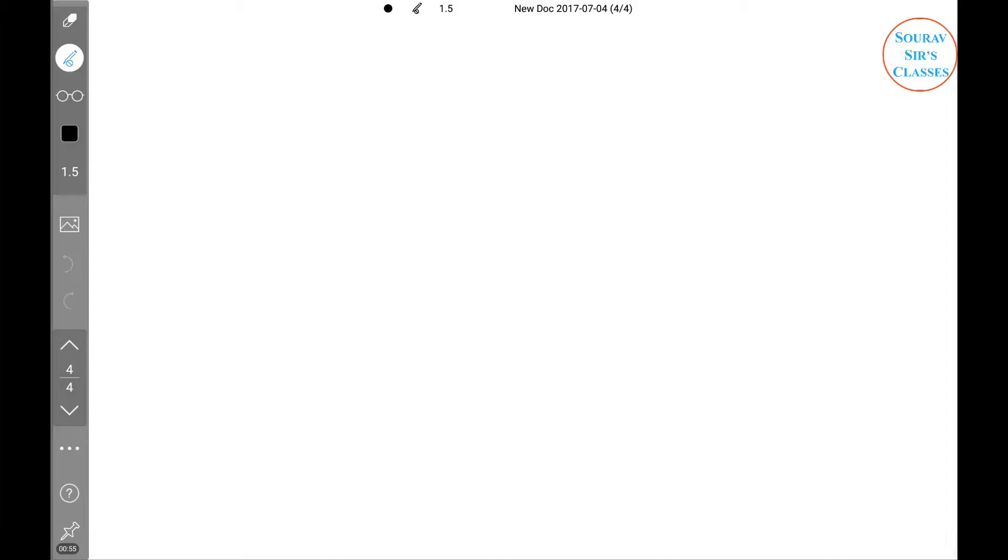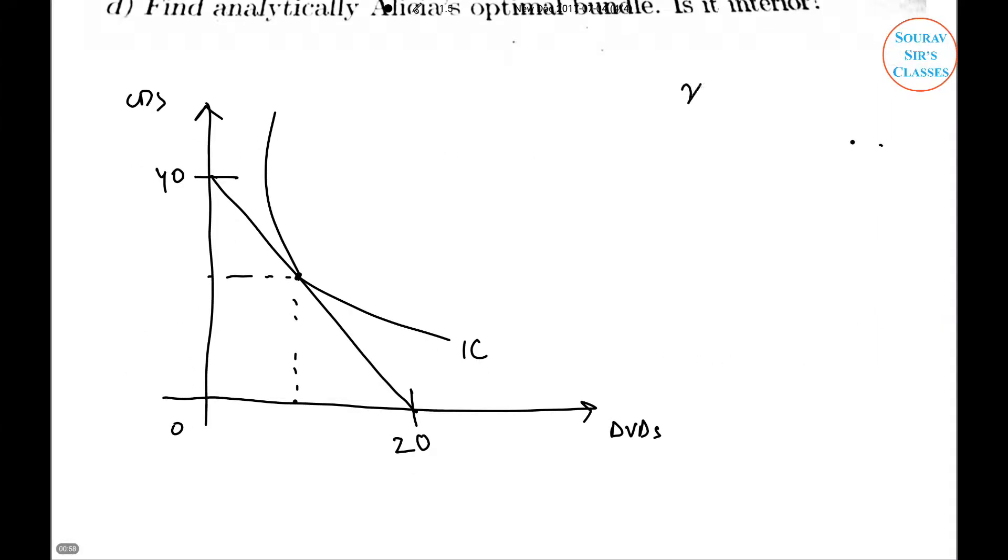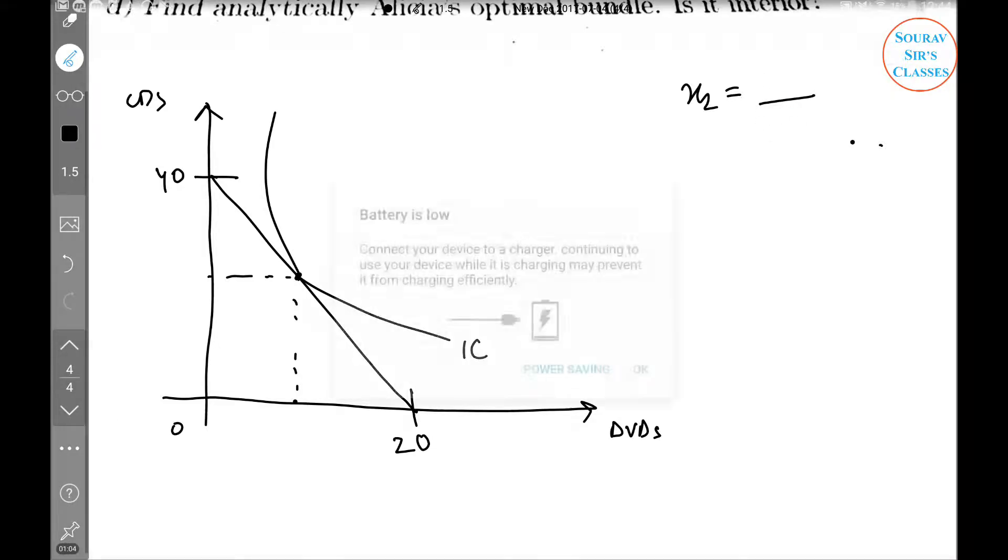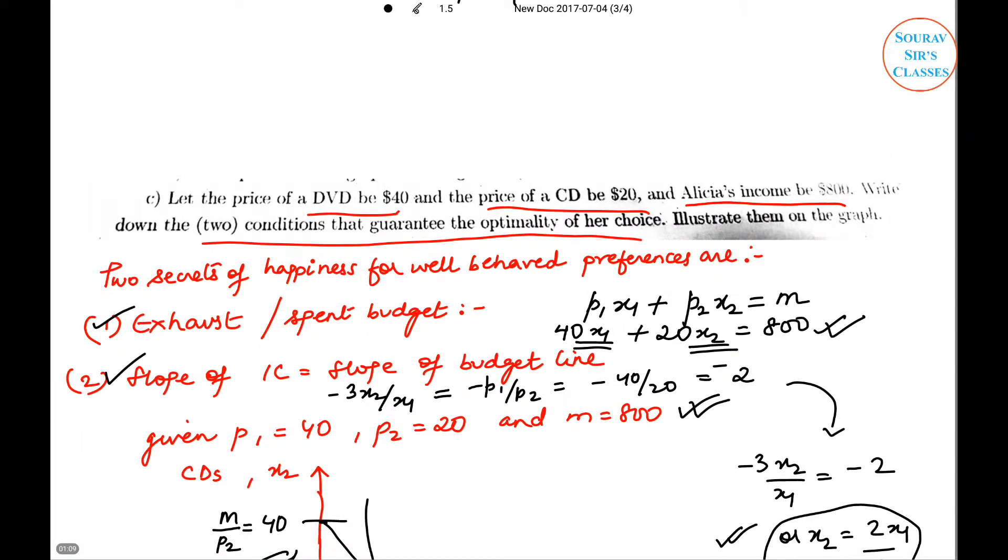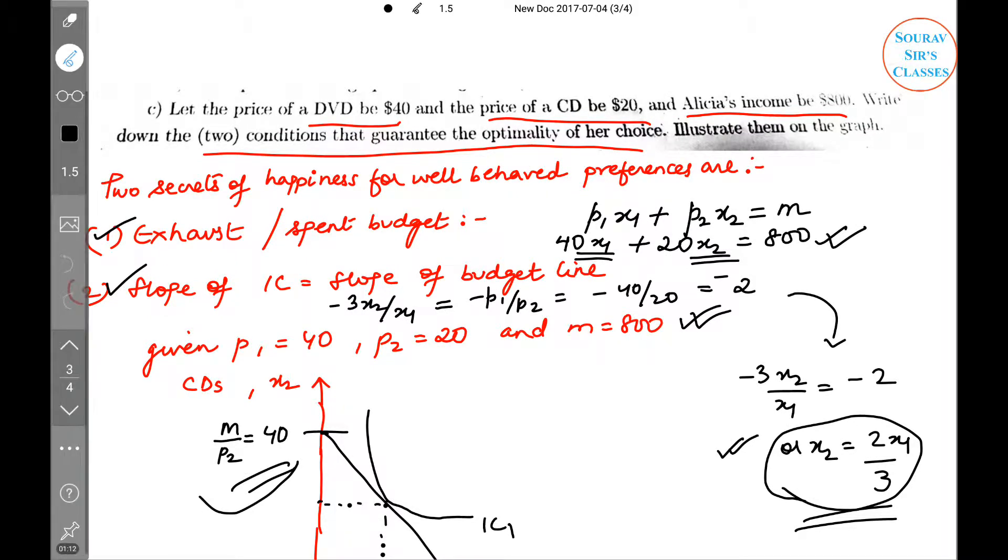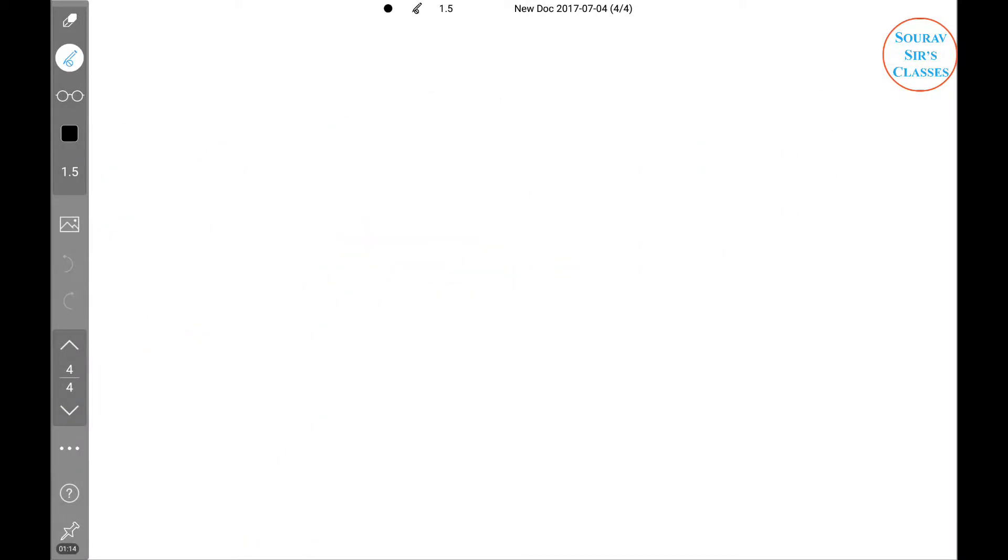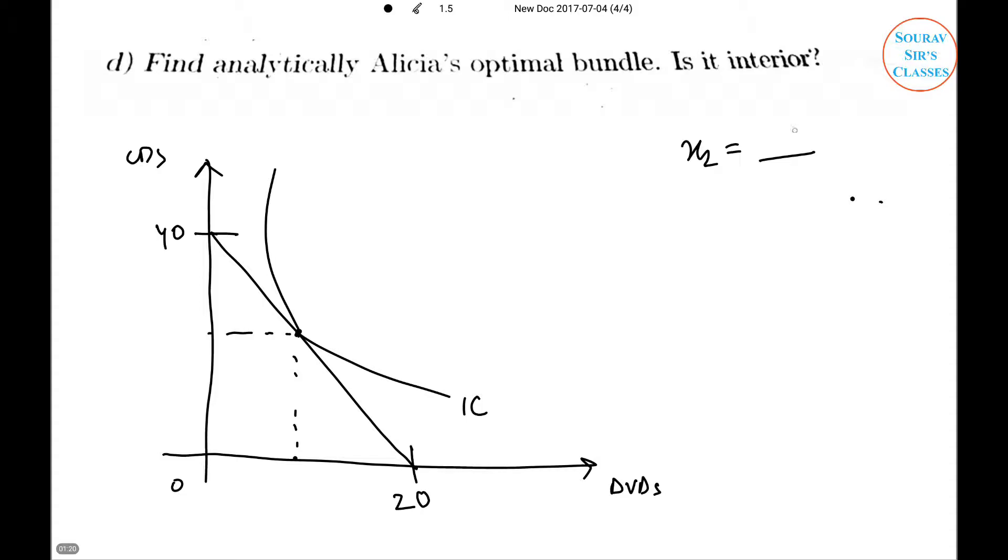So we have x2 is equal to 2x1 by 3. Let us write this: 2x1 by 3. And we also have our budget equation. Both of these were provided - this we have derived and this was already provided in the question.